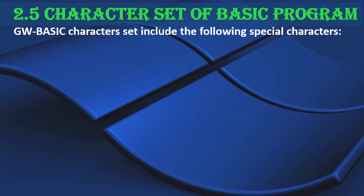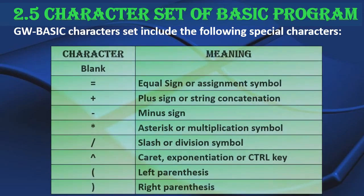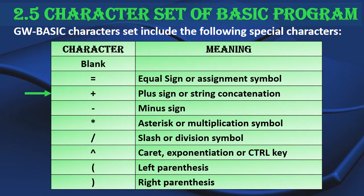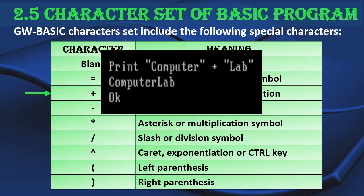The special characters of the GW BASIC character set include: blank, created by pressing the spacebar. The equal sign, used as an assignment symbol — for example, A = 5 means assigning the value 5 to variable A. The plus sign is used for addition or for string concatenation — for example, writing plus between the strings 'computer' and 'lab' will combine them into one string. Remember that a string means a combination of alphabets.